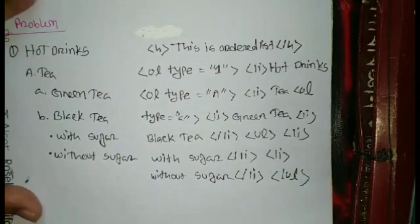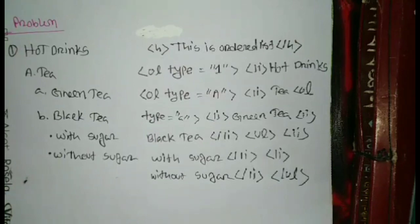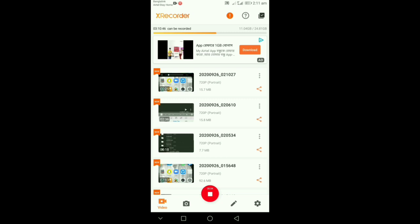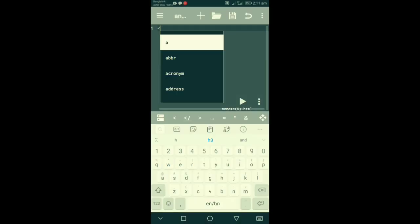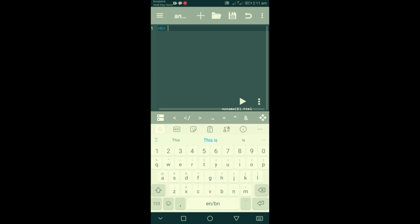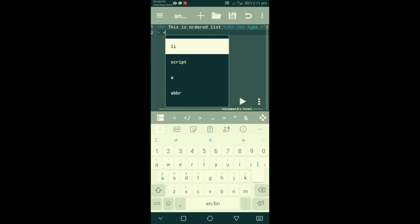This is our list and the HTML tag. This is our browser and the HTML tag. I will show the HTML tag. First heading is the HTML tag. Type equal 1. Then attack rules, then hot drinks. And then li.